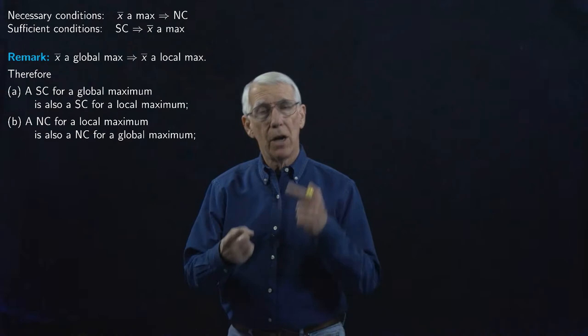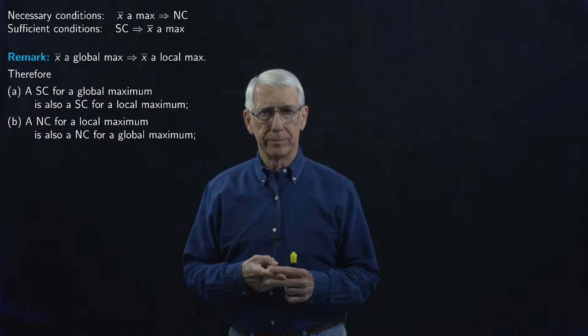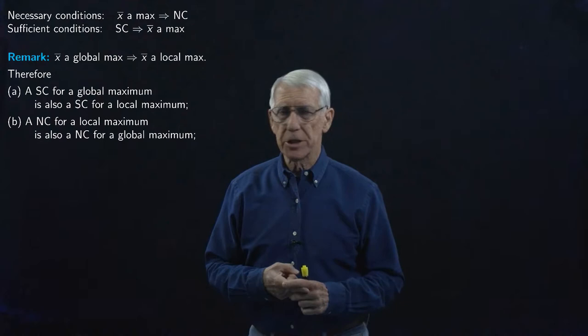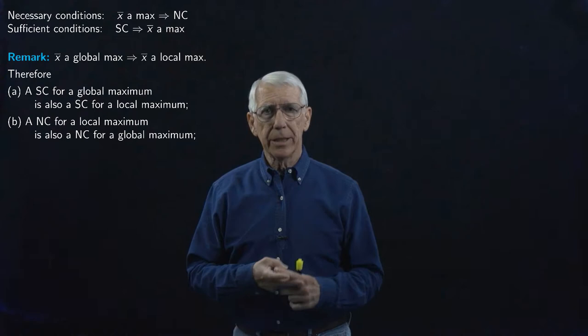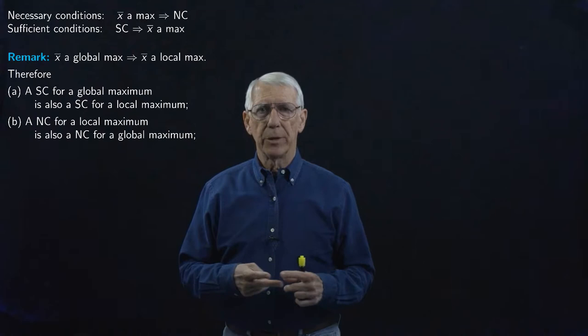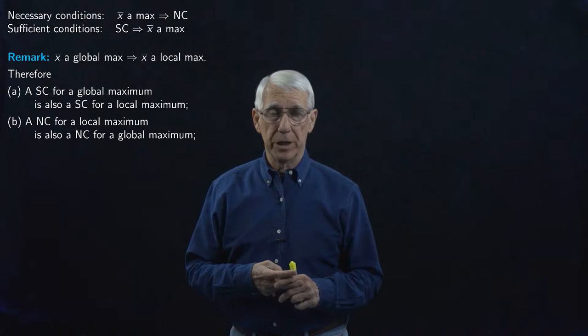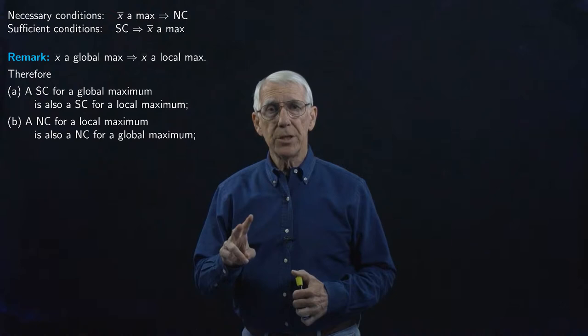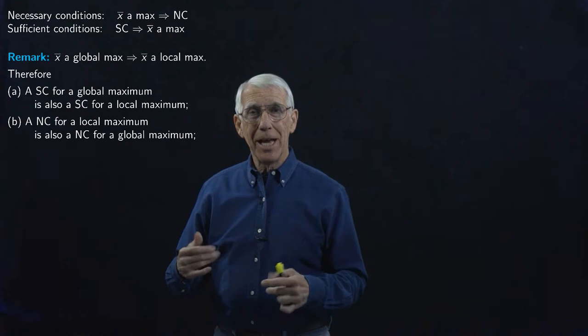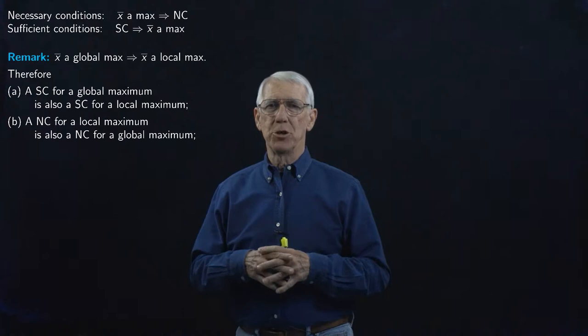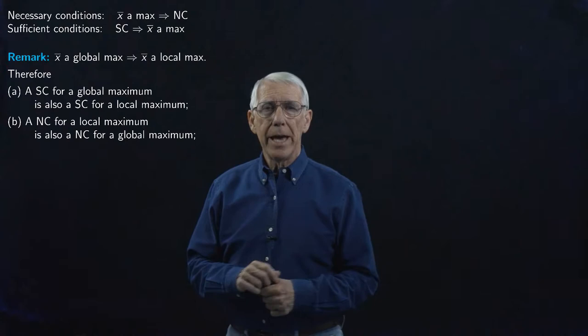The necessary conditions we obtained last time for a global maximum were: a first-order condition saying that the derivative or gradient at the candidate maximum point has to be zero or the zero vector if it's a gradient in higher-dimensional space; and a second-order condition saying the Hessian matrix of second partial derivatives has to be negative semi-definite if we're at a maximum point. Those conditions have to hold for a global maximum. So if we assume the decision maker is globally maximizing, those necessary conditions will hold.